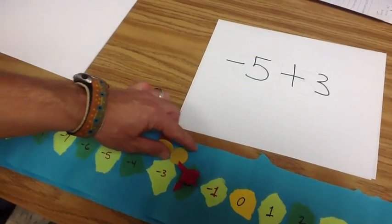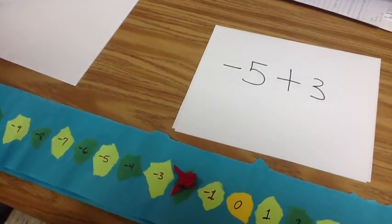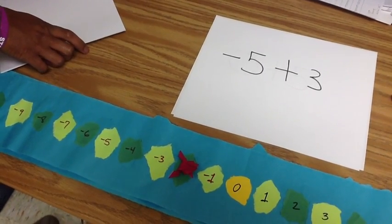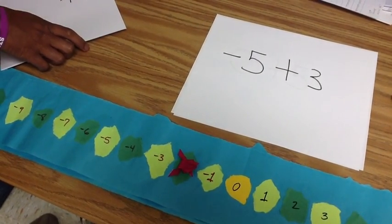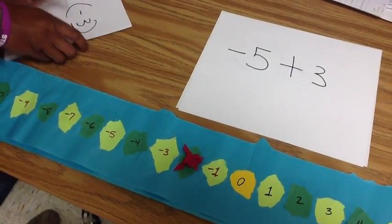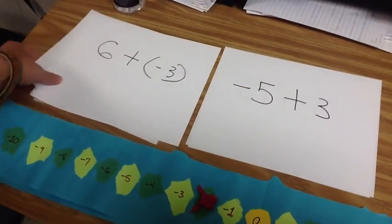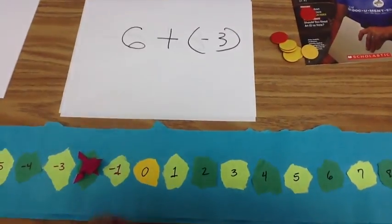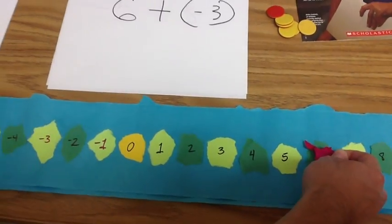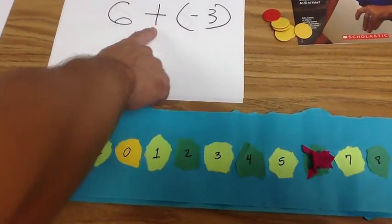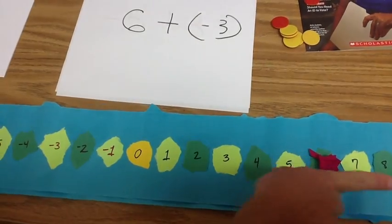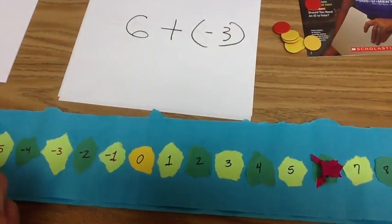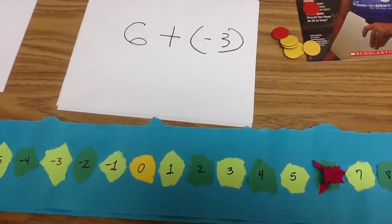Let's do one where we have a positive number plus a negative number. We have six plus negative three. So the six tells us where to start. Plus means it's a happy frog, so it's facing towards the positive. Negative three tells us it's hopping backwards. So this is a multi-talented frog that actually hops backwards.